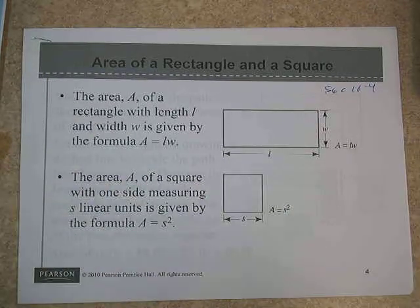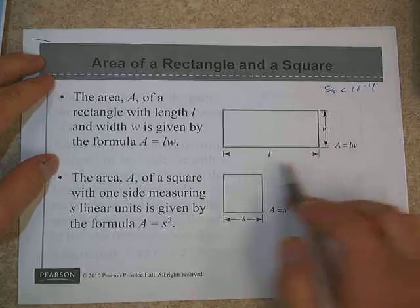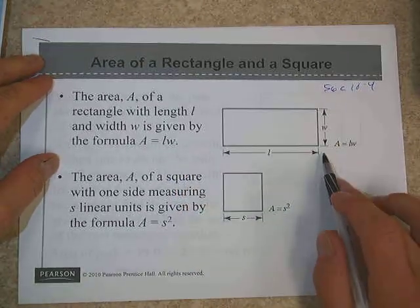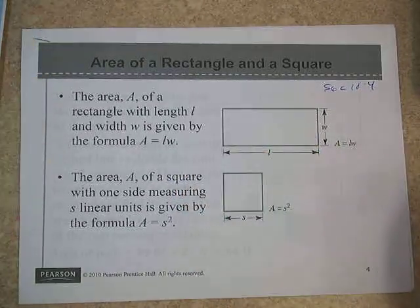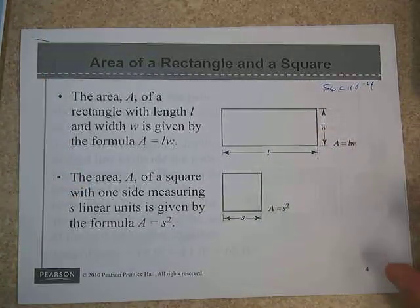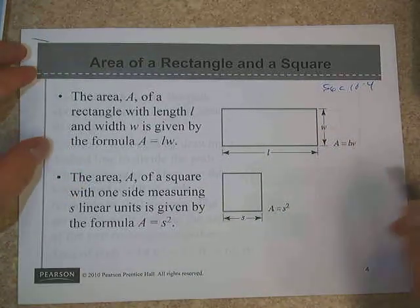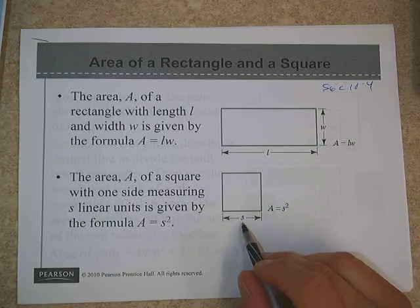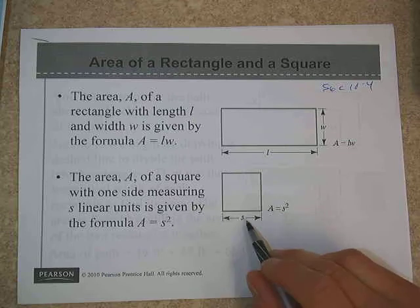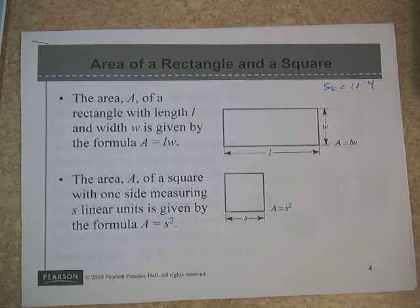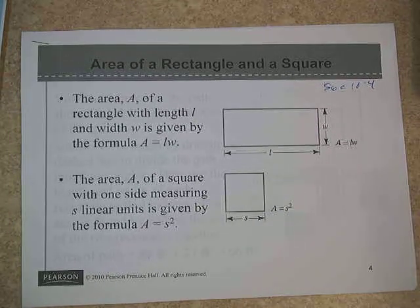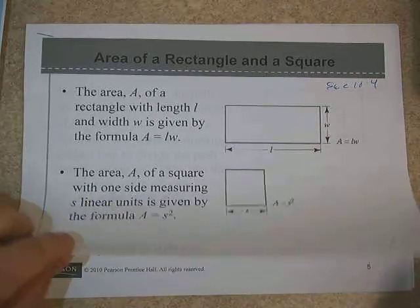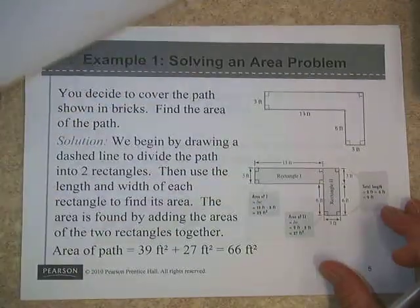Of course we know from our previous math classes the area of a rectangle is always going to be given by the length times the width. And that gives us an amount of area, amount of space taken up by this particular rectangle. When we have a square, both the length and the width are the same length, so we generally call it S, standing for side length. And ultimately S times S, for the same reason we would denote that as S squared. So area of a rectangle, area of a square.